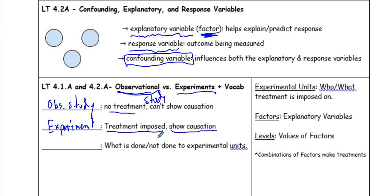In an experiment, treatments are imposed and they can establish causation. Some other vocabulary: experimental units are what treatments are imposed on; factors are explanatory variables; levels are the values of the factors; and combinations of factors make treatments. Let's go through an example applying these concepts.